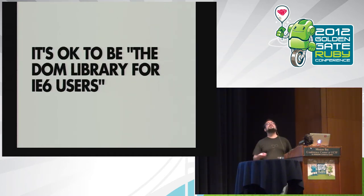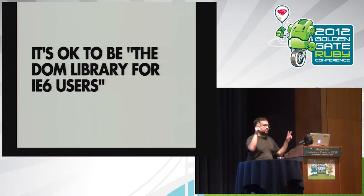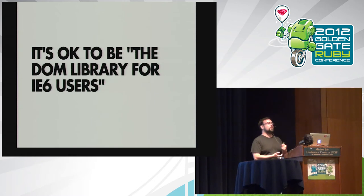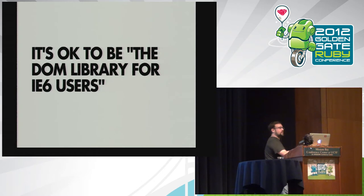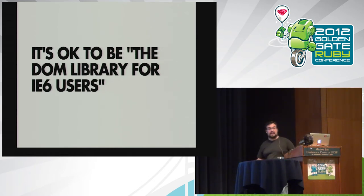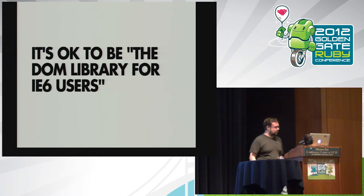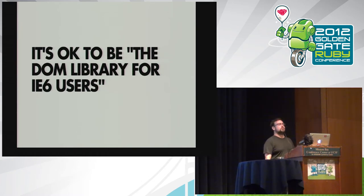On the flip side, it is okay for you to be the DOM library for IE6 users. If you had a construction management app that supported some old version of Microsoft Project, it is okay if you decide 'we're going to be the construction management app for Microsoft Project 98.' That might be an assumption that is still valid for your project. That is a valid conclusion you can make when reevaluating your assumptions.